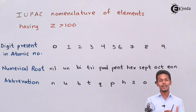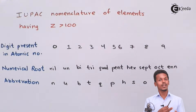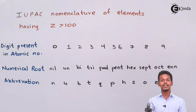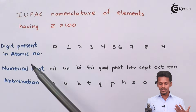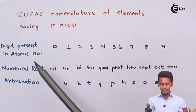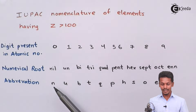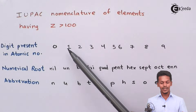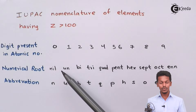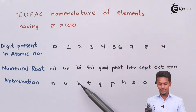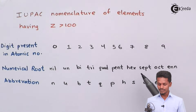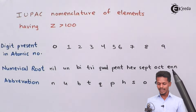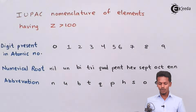These numerical roots also have abbreviations, because we can't always write the full IUPAC name. Just like sodium is 'Na' and silicon is 'Si', these elements also have symbols. For nil the abbreviation is 'n', for un it is 'u', for bi it is 'b', for tri it is 't', for quad it is 'q', for pent it is 'p', for hex it is 'h', for sept it is 's', for oct it is 'o', and for en it is 'e'.